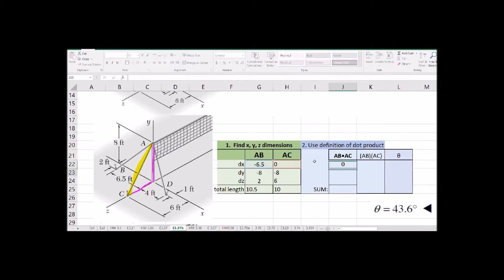For the dot product, it's X times X, Y times Y, and Z times Z. And you're just going to add those together, sum them together. That's the left-hand side of that dot product.